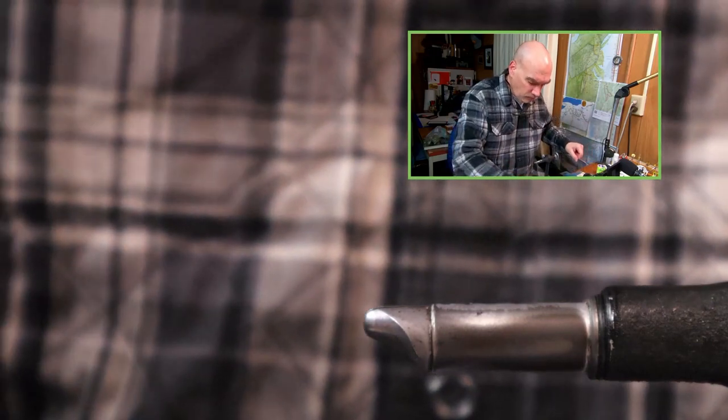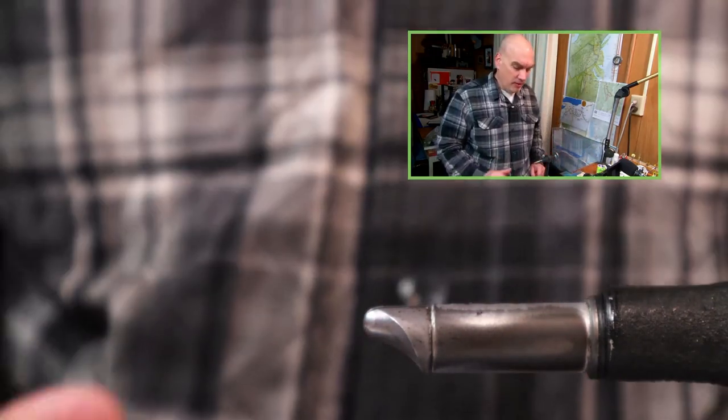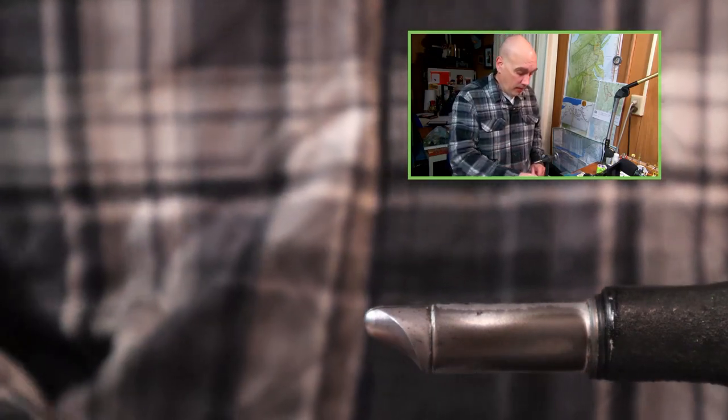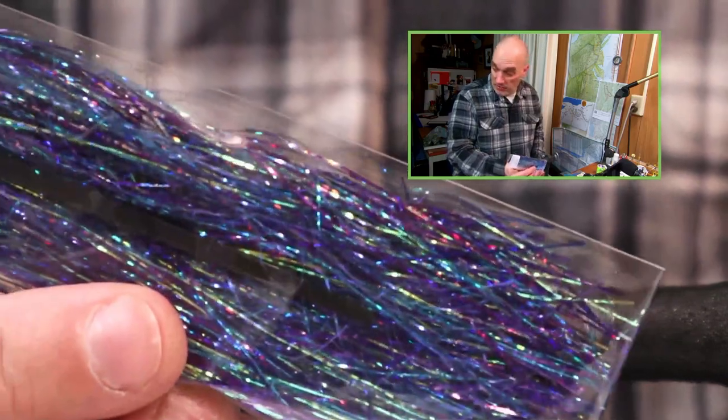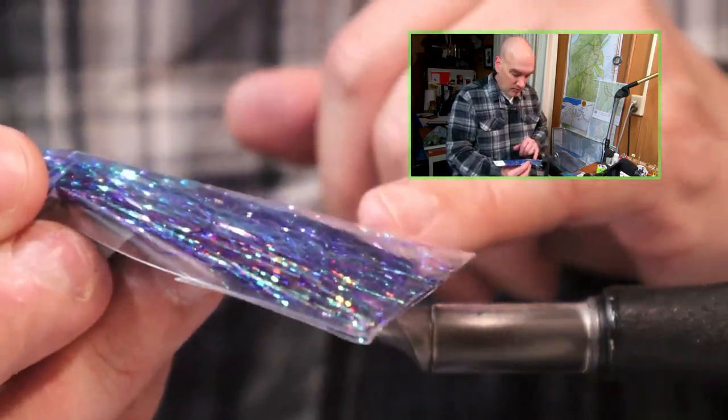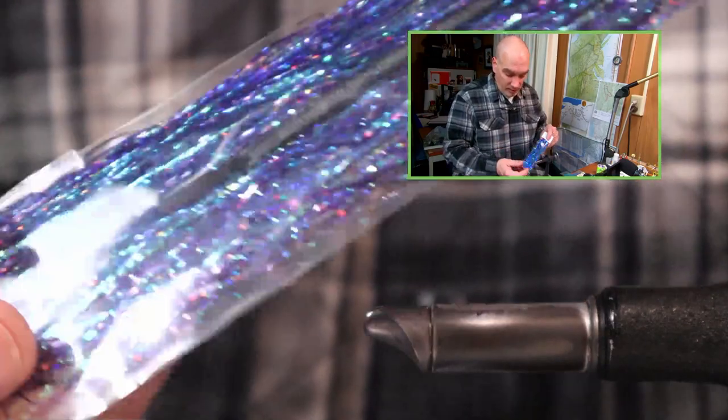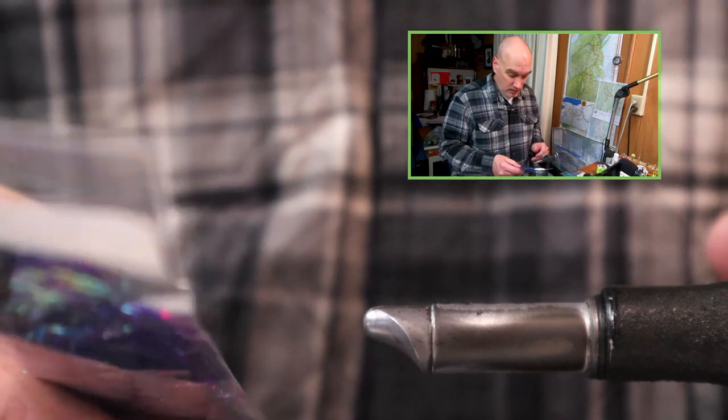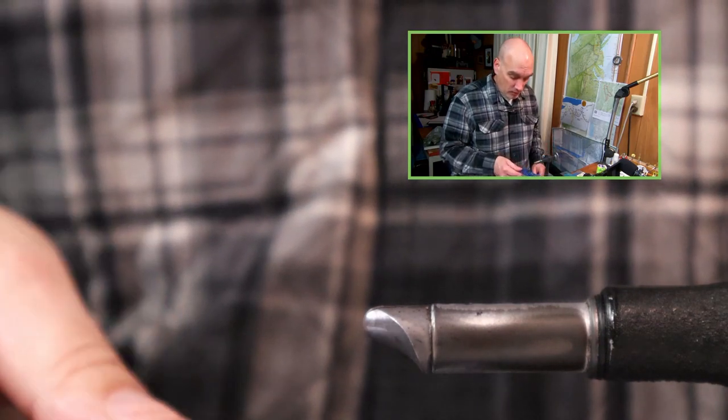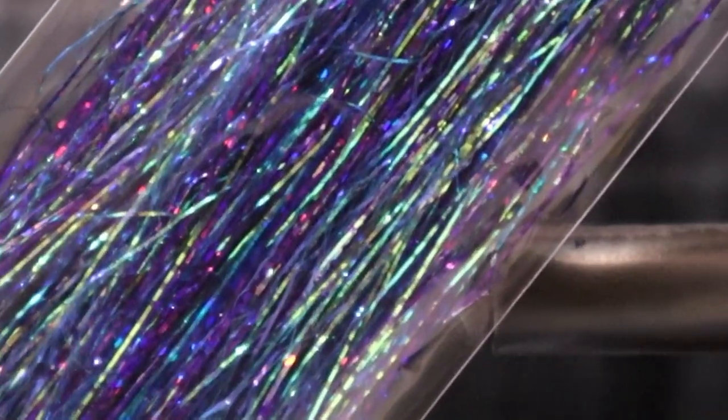These jigs will be single color today, though I might do a couple two-color jigs later. I'd like to incorporate some of this new age crinkle flash. It's fairly fine, kind of the same diameter as crystal flash or angel hair, but it's a flat tinsel with that crinkle texture. The color on this is winter run blue - a nice combination of blues, purples, a little bit of green and maybe a touch of pearl.